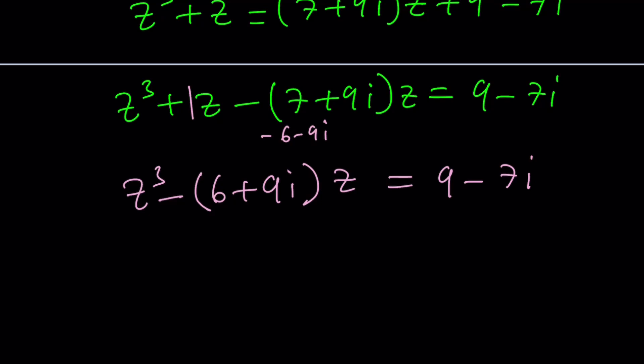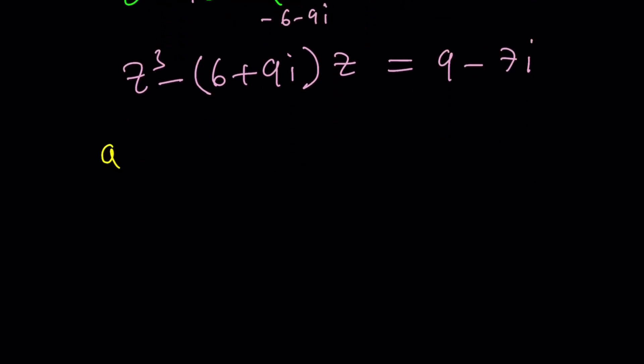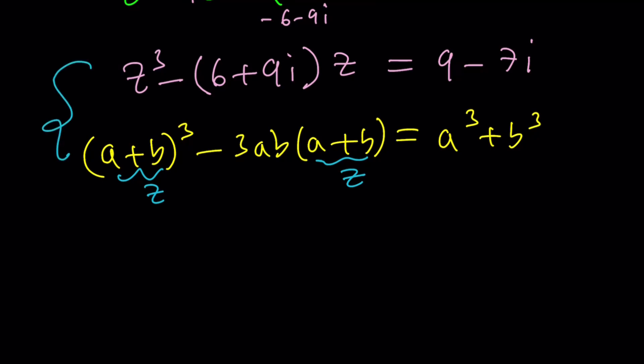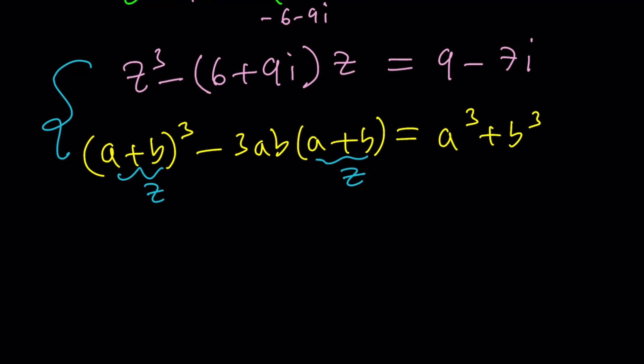This is how the cubic formula works. I'm going to write the identity one more time: (a+b)³-3ab(a+b) equals, remember from the binomial theorem, a³+b³. This also shows you how you can factor sum of two cubes. But that's a different story. Let's stick with the cubic formula. We're going to call this z, so a+b is z. By comparing these two equations, we're able to get ab and a³+b³, which gives us a system.